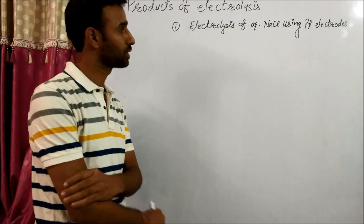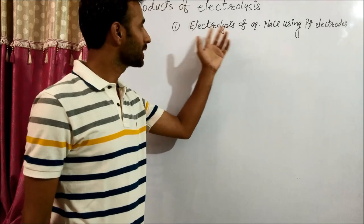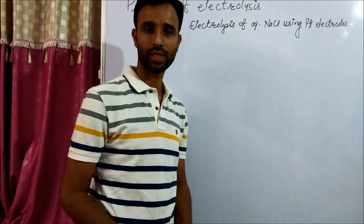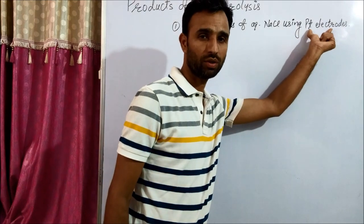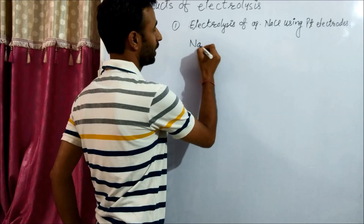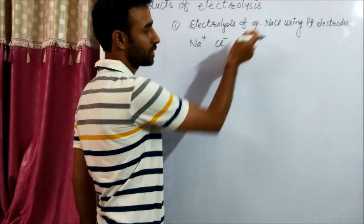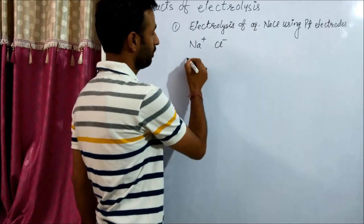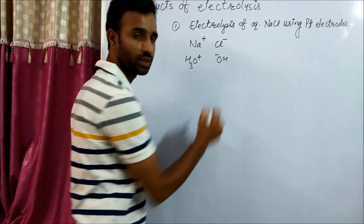So this is the products of electrolysis part 2. First question is electrolysis of aqueous NaCl using platinum electrode. Again you know platinum electrode, inert electrode. Now aqueous NaCl gives Na+ ion, Cl- ion. And aqueous means water that gives H3O+ ions and OH- ions.